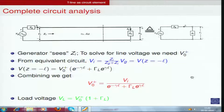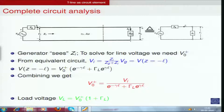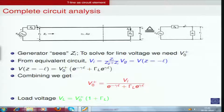Now let us look at complete circuit analysis including the source and load. We consider a transmission line of length l terminated by load Z_L. The generator has internal impedance Z_g, and the input terminal voltage and current are V_i and I_i. The impedance seen at the input terminals is not Z_L but Z_i — the load Z_L transformed through length l of the transmission line.